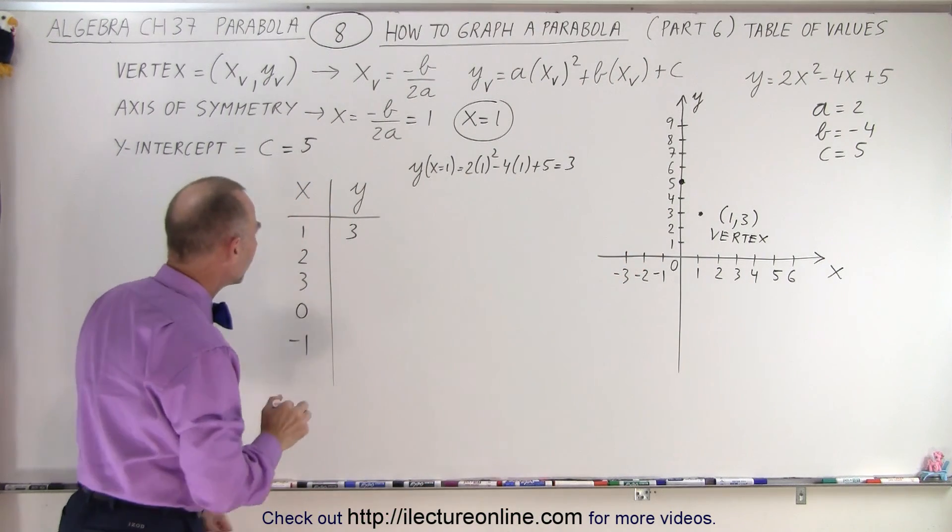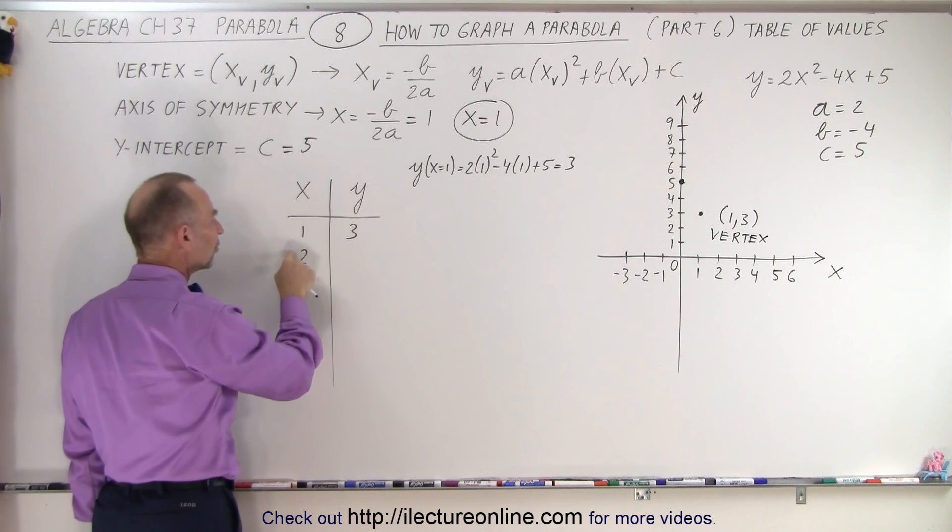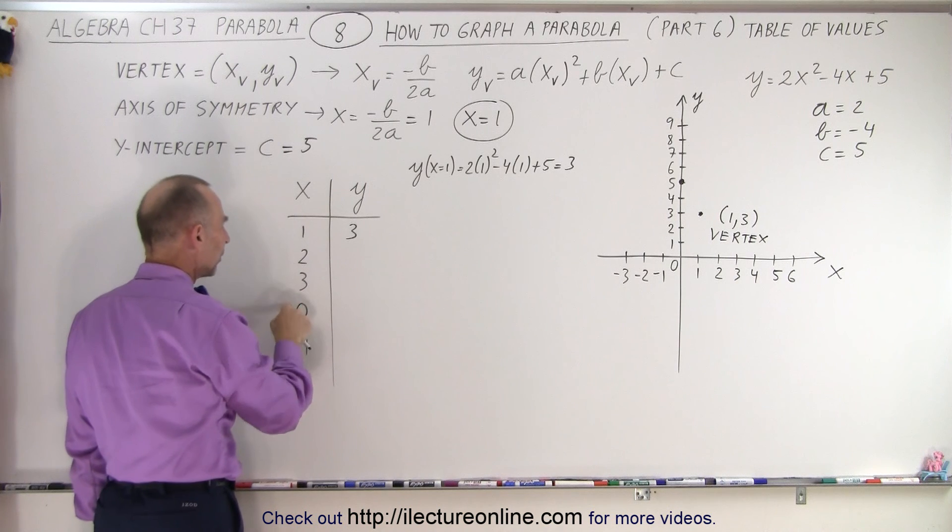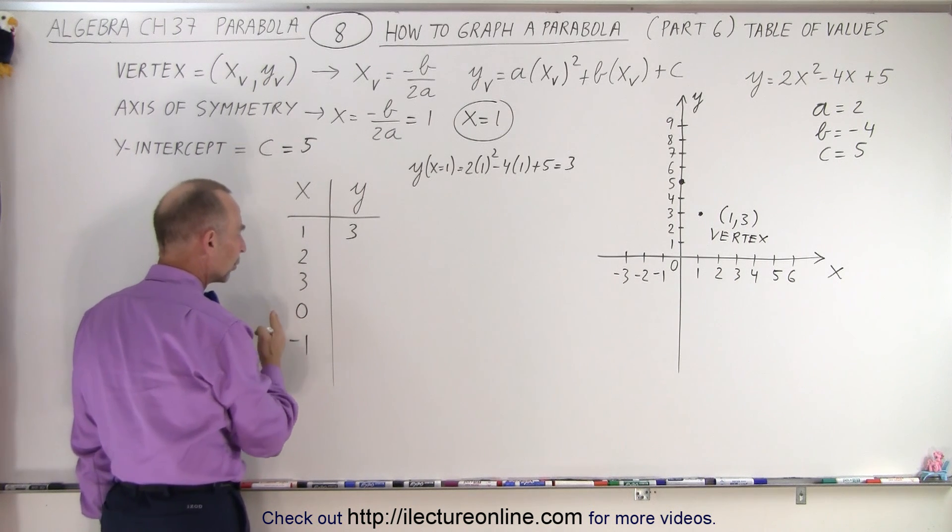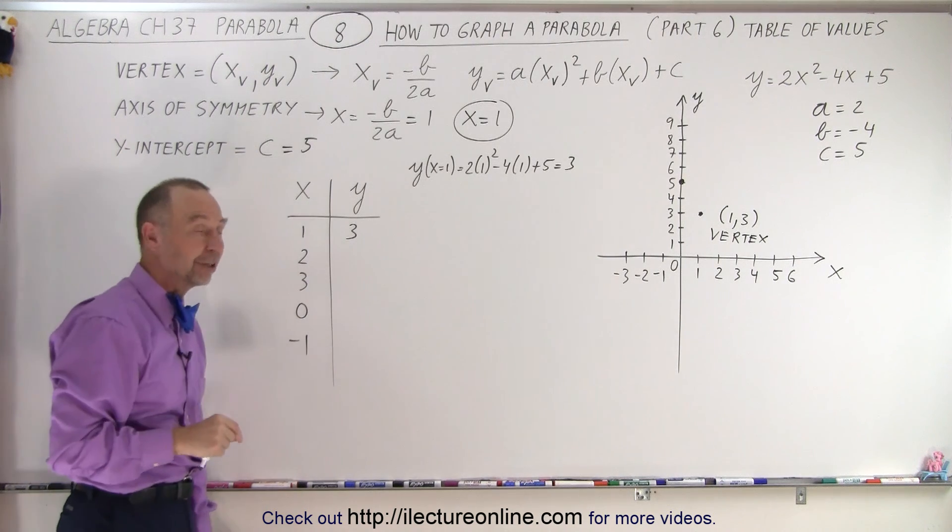Now notice this is the x value of the vertex. I want at least a couple of points that are greater than that and a couple of points that are less than that. So we're going to go to the right and to the left of the x value where we have the vertex.